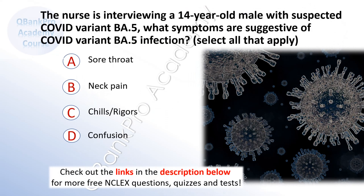The nurse is interviewing a 14-year-old male patient with suspected COVID variant BA5. What symptoms are suggestive of COVID variant BA5 infection? Select all that apply. A. Sore throat. B. Neck pain. C. Chills and rigors. D. Confusion.